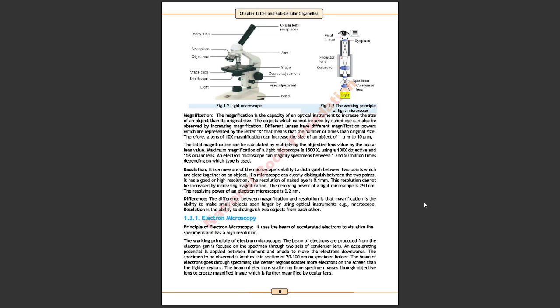If we have 1 micrometer object, we can see the size of 10 micrometer. The total magnification can be calculated by multiplying the objective lens value by ocular lens value. Maximum magnification of a light microscope is 1500x using a 100x objective and a 15x ocular lens.